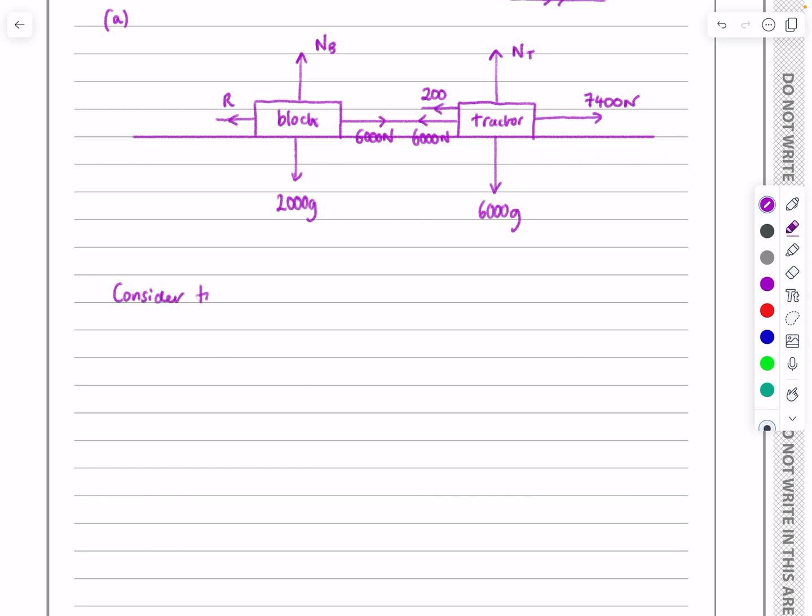So I'm going to tell the examiner, consider the tractor. Resolve horizontally. And if I resolve horizontally, I'm going to get F equals MA. So horizontally, I've got those forces acting 7,400 minus the 200 minus the 6,000. That's the overall force. That's going to be equal to mass times acceleration. So 7,400 minus the 200 minus the 6,000 is equal to mass. We're only considering the tractor. So it's 6,000 times acceleration. So acceleration is the only thing we don't know there. Just tidy that up. That's 1,200 is equal to 6,000A. So A will work out to be 1,200 divided by 6,000, which is, I always tend to leave it in terms of fractions. It's a fifth or 0.2 meters per second squared.